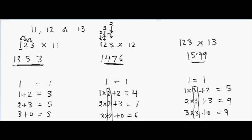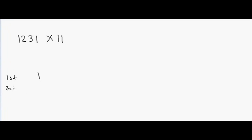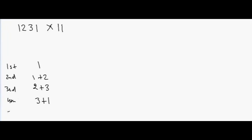That's how I multiply any number by 11, 12, or 13. Let's do another example: if I have 1231 and I multiply by 11, the first digit is 1, second is 1 plus 2, third is 2 plus 3, fourth is 3 plus 1, and the fifth is just 1. So the answer is 13541.